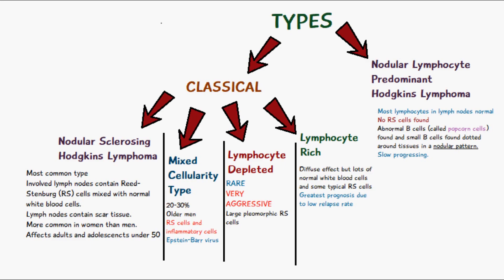In mixed cellularity, Reed-Sternberg cells are mixed with inflammatory cells such as eosinophils, basophils, and cytokines. The main cause of the mixed cellularity type is the Epstein-Barr virus.